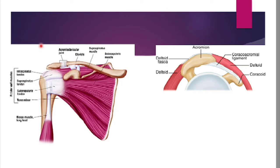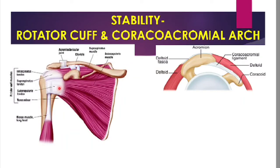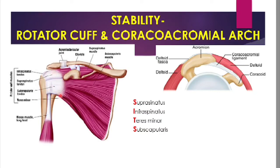The articular surfaces of the shoulder joint are the head of the humerus and the glenoid cavity of the scapula. The stability of the shoulder joint is maintained by two factors: the musculotendinous rotator cuff and the coracoacromial arch. The rotator cuff is formed by the tendons of four muscles remembered by the mnemonic SITS: supraspinatus above, infraspinatus and teres minor behind, and subscapularis in front. These tendons blend with the fibrous capsule; the inferomedial part is the weakest region, maximally stretched during abduction. Rotator cuff syndrome results from complete or partial rupture of one or more of these tendons.